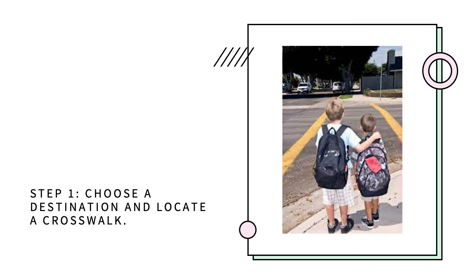Here is what the steps look like with pictures. The first step is to choose a destination to walk to and locate a crosswalk. Once you find the crosswalk, wait at the end of the sidewalk like the boys in the photo, and then proceed with the next crosswalk safety steps.